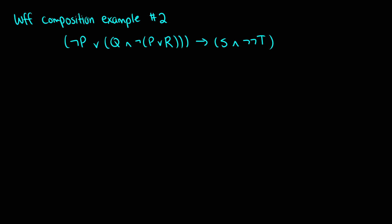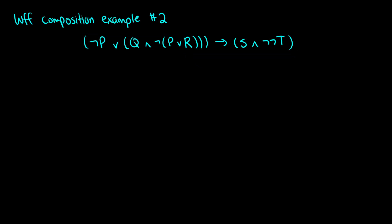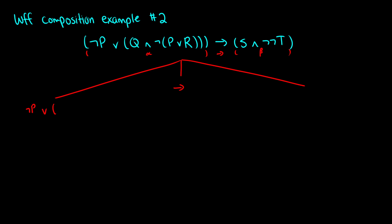Let's take a look at another example — this one's a little more complicated. The first thing I do is look at our brackets. I see an open bracket here, and it closes over here, so this is one well-formed formula alpha. There's an arrow as our operator, and another set of brackets for beta: (S and not-not-T). So we can break this down into three components with an arrow in the middle. On the left we have (not-P or (Q and (not-P or R))), and on the right we have (S and not-not-T).